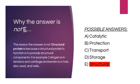Option E: Immunoglobulin would be classified as a protection protein, not a structural protein. The reason is that a structural protein's function is to provide structural components — for example, collagen is in tendons and cartilage, and keratin is in the hair, skin, and nails.